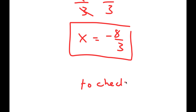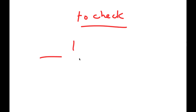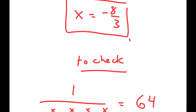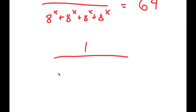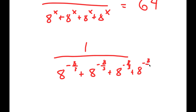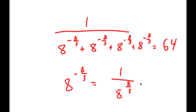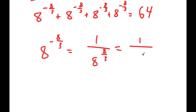To check, my original equation was 1 over 8 to the power of x plus 8 to the power of x plus 8 to the power of x plus 8 to the power of x is equal to 64. We know x equals negative 8 over 3, so I'm going to plug negative 8 over 3 in for all my x's. What is 8 to the power of negative 8 over 3? Well, 8 to the power of negative 8 over 3 is the same thing as 1 over 8 to the power of 8 over 3, which is the same as the cube root of 8 to the power of 8.